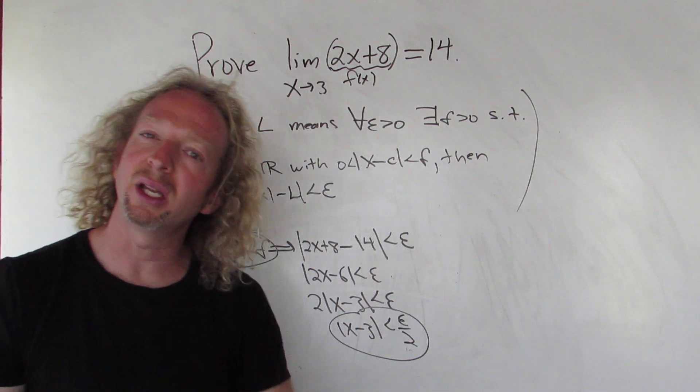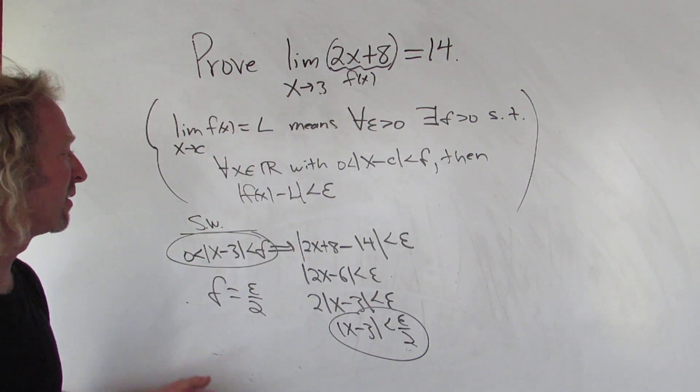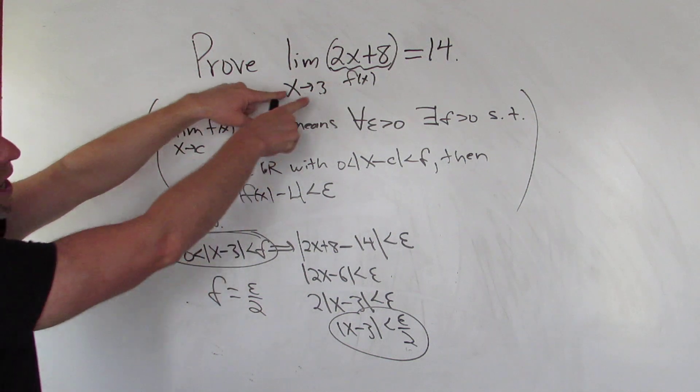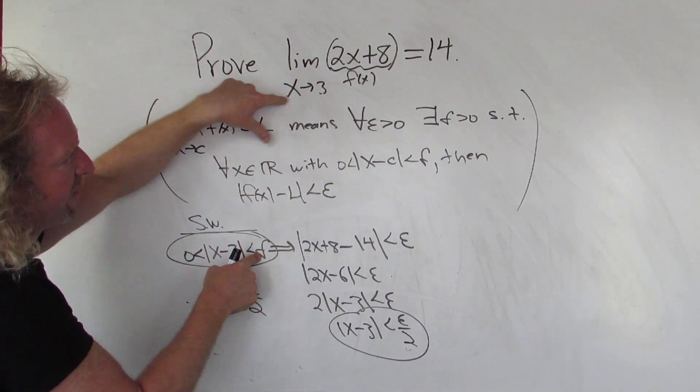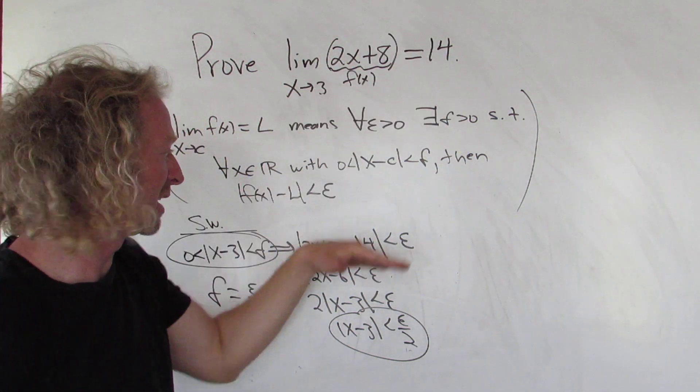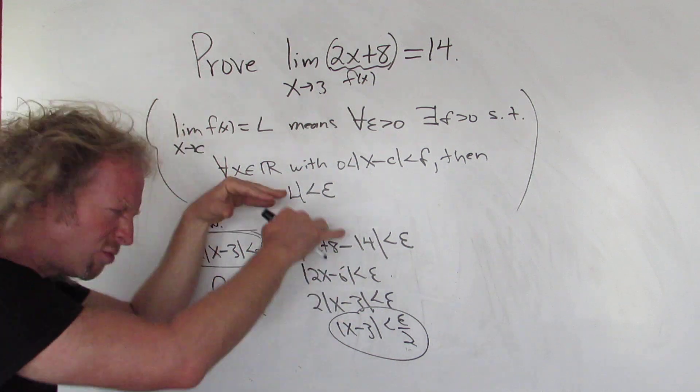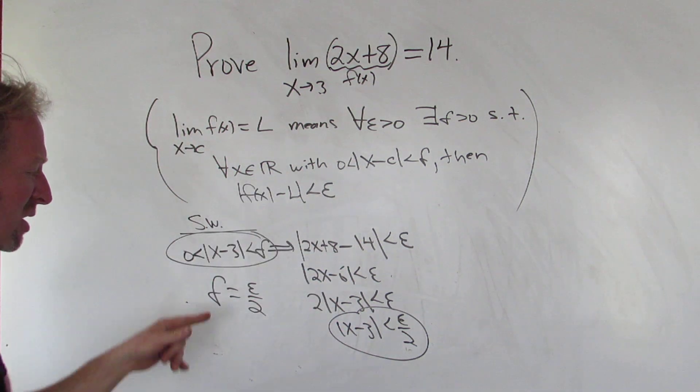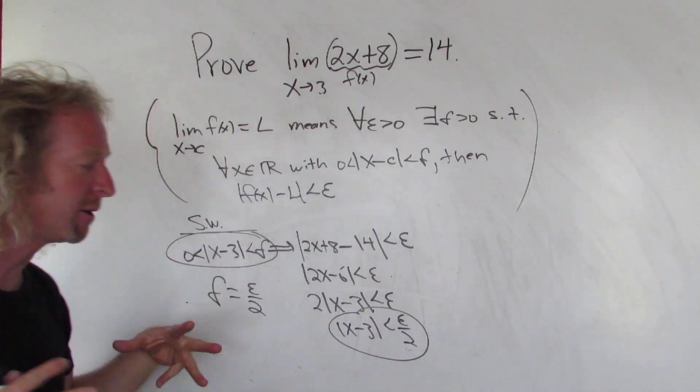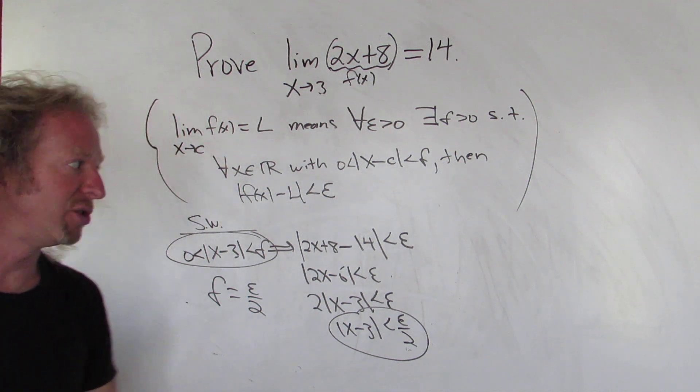So step one when you're doing any delta epsilon proof is to figure out delta. So you start by writing x minus this number less than delta. Then you do f(x) minus this less than epsilon. And you just keep writing it down. Make it match. Once it matches, just do matching, and that is your delta.